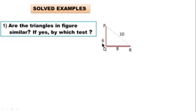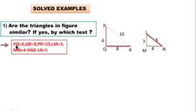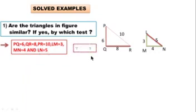Solved example 1: Are the triangles in the figure similar? If yes, by which test? Observe the two figures of triangle PQR and triangle LMN. The length of all sides of both triangles is given. In triangle PQR: PQ equals 6, QR equals 8, and PR equals 10. In triangle LMN: LM equals 3, MN equals 4, and LN equals 5.